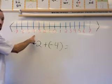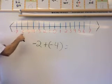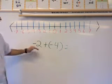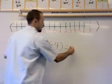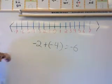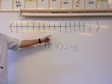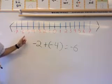1, 2, 3, 4. So negative 2 plus negative 4 equals negative 6 because that's where I landed when I counted over from negative 2 to negative 4.